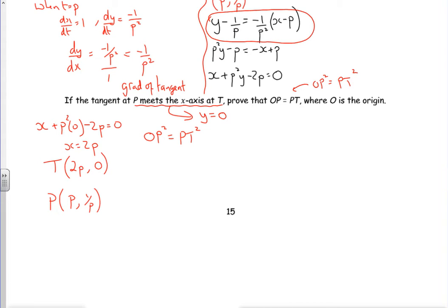Right then, so O to P squared will be p takes 0 squared plus 1 over p takes 0 squared. So OP squared is p squared plus 1 over p squared. There.